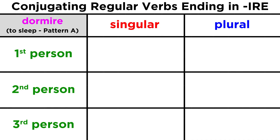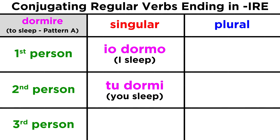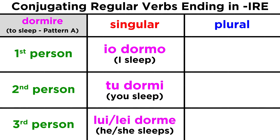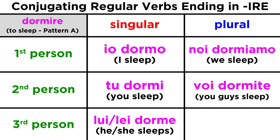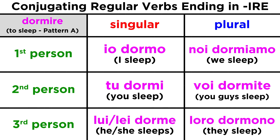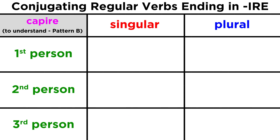Dormire, which means to sleep, will conjugate as follows. For pattern B, we can conjugate capire, which means to understand.